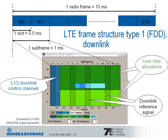A subframe of 1 millisecond is illustrated here in a screenshot from a signal generator from Rohde & Schwarz — this is a real signal. The x-axis shows the time domain, showing an extract of 1 millisecond or 14 OFDM symbols for the normal configuration. On the y-axis is the frequency domain with 50 resource blocks, which is a 10 MHz signal.